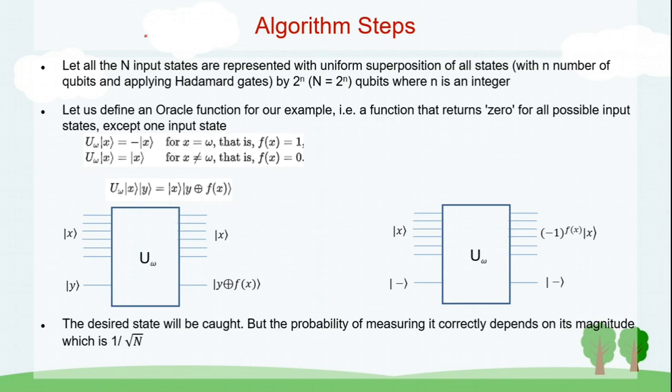So, what are the steps involved? First, we need to represent all the n input states. That can be done by having small n number of qubits. So, what is small n? 2 to the power of n equal to capital N. With this, we will be able to represent with the help of superposition and Hadamard Gates all n input states.